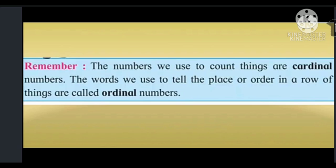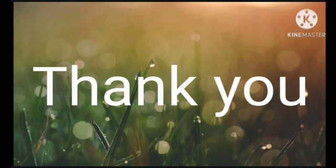So children, remember: the numbers we use to count things are Cardinal Numbers. The words we use to tell the place or order in a row of things are called Ordinal Numbers. Thank you.